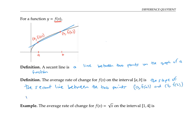In symbols, that slope m is the rise over the run, or the change in y over the change in x, which is the difference in y coordinates, f of b minus f of a, over the difference in x coordinates, b minus a. So this is the average rate of change.